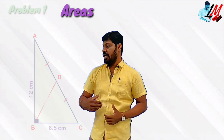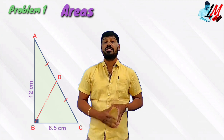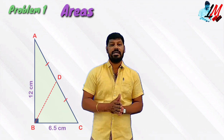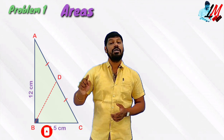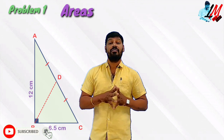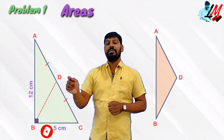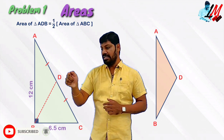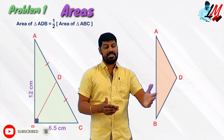Let's look at the first question. This is a diagram of triangle ABC, a right triangle where the angle is 90 degrees. The given information is AC = 12 cm and BC = 6.5 cm. D is the midpoint of AC, so AD is equal to DC, and BD is the median. The area of triangle ADB equals half the area of the entire triangle ABC, because the median divides every triangle into two equal areas.